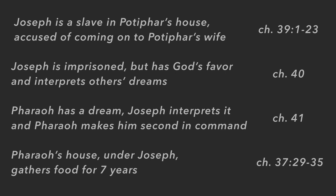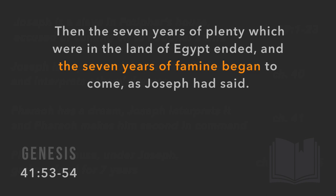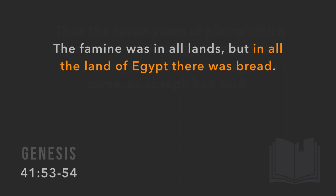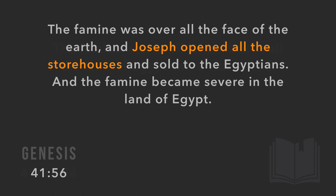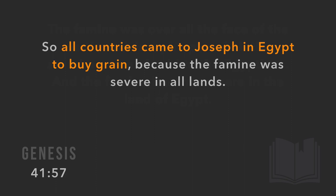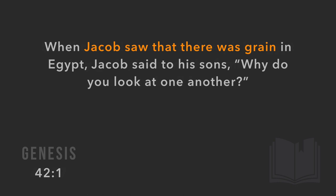Pharaoh puts Joseph in charge of gathering food. The dream said there would be seven years of plenty followed by seven years of famine, so Joseph is tasked with storing food in Pharaoh's storehouses. Then Genesis 41 records: the seven years of plenty ended and the seven years of famine began, just as Joseph had said. The famine was in all lands, but in all the land of Egypt there was bread. Joseph opened the storehouses and all the surrounding countries came to Egypt to buy grain because the famine was severe everywhere.